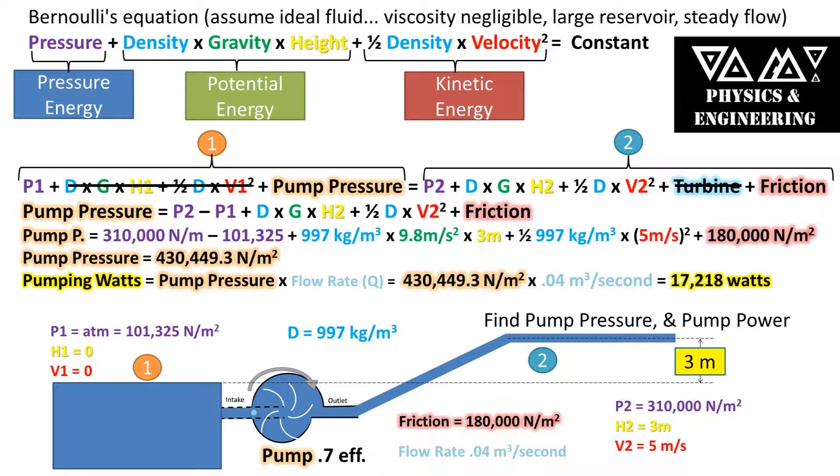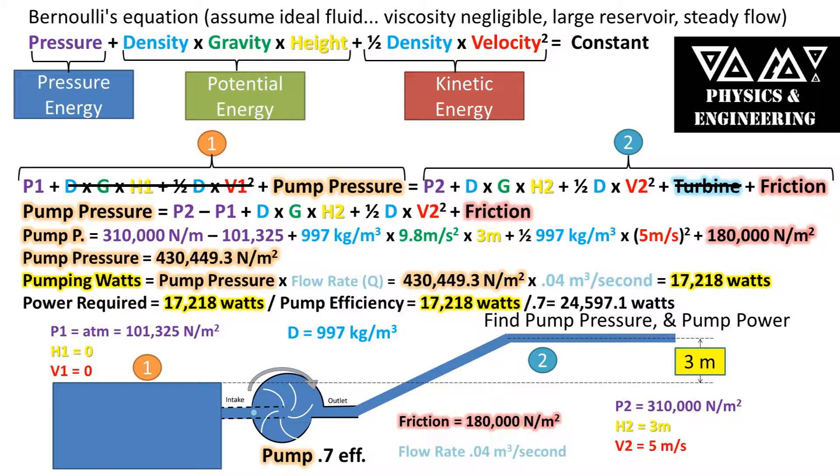Next, to get the pump power, we can multiply this value times the flow rate of 0.04 meters cubed per second, and we get 17,218 watts for the pumping power giving a hundred percent efficiency. We unfortunately don't live in a perfect world so some energy is lost, so we must divide by the efficiency of the pump to get 24,597 watts of power needed to run this pump.